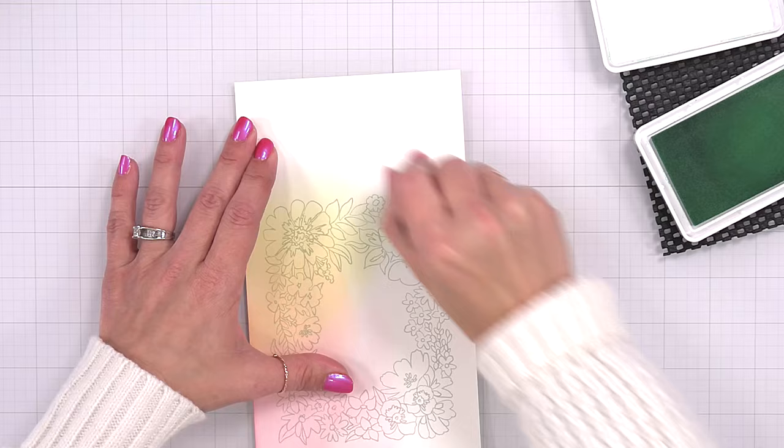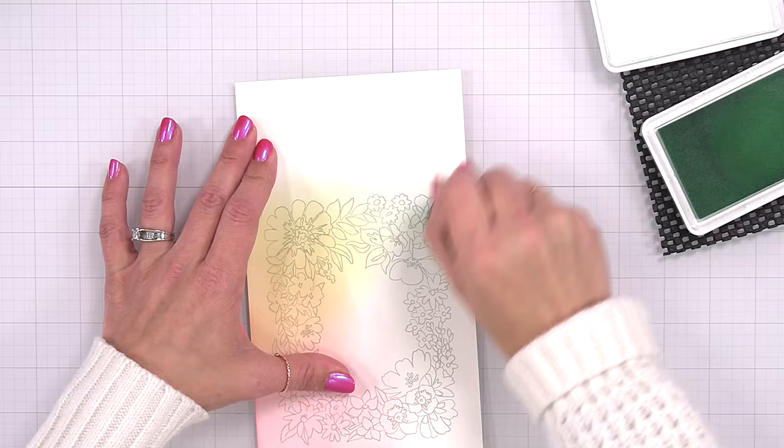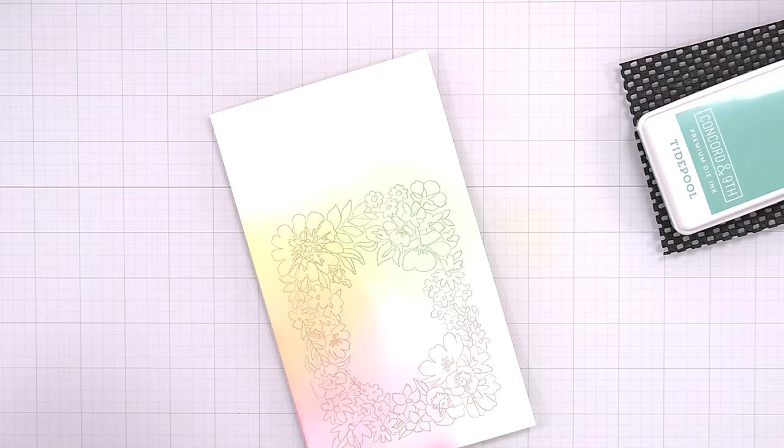For my green, I went with the Concord and Ninth sea glass, which is kind of a minty green. It's really pretty and just kind of a different shade than what you may normally see. And then for the blue, I am going to be using tide pool.